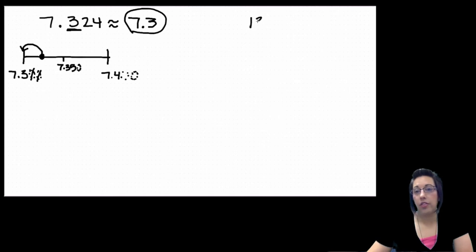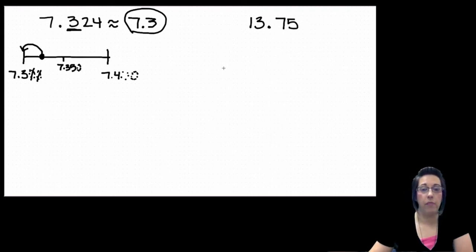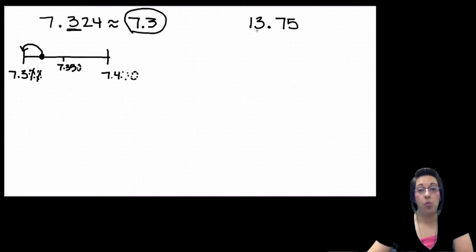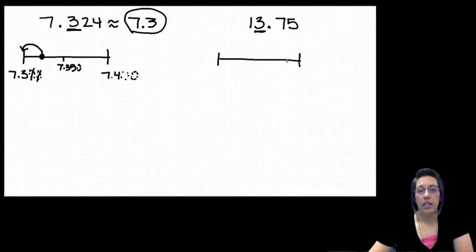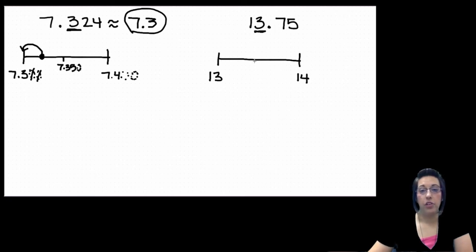Let's look at thirteen and seventy-five hundredths. We want to round to the nearest whole number — that would be the ones place. So we underline the ones place and draw our number line. Let's look at our choices: we have thirteen as one option, or fourteen would be our next option. We do halfway in the middle — that would be thirteen and five tenths.